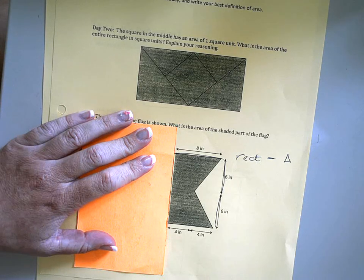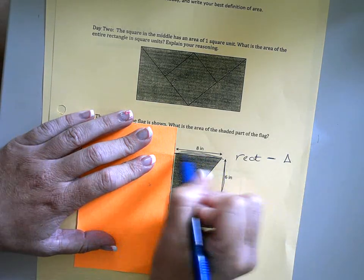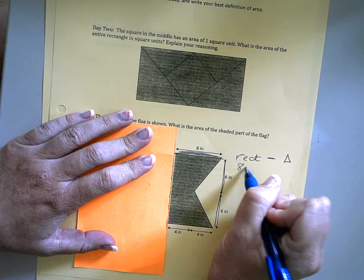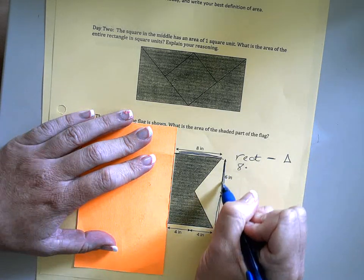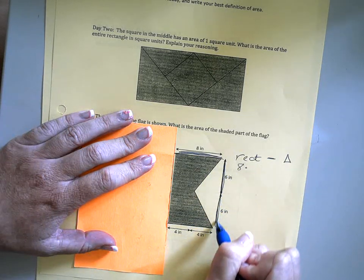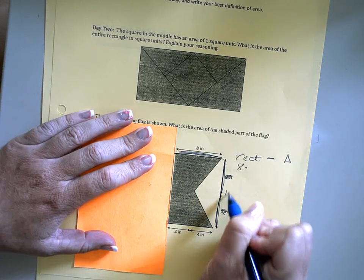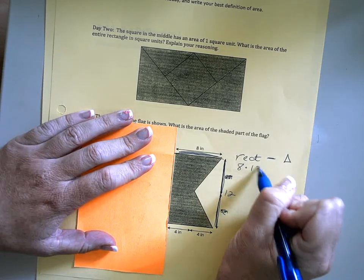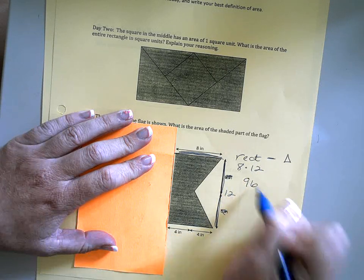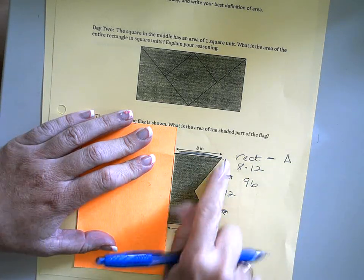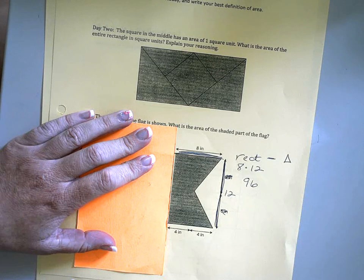So let's find the area of the rectangle. Well, we have one side that measures 8 inches and one side that measures 6 plus 6 inches. So that's really a total of 12 inches. So the whole area is 96 inches squared, but we need to subtract this piece that we're not using.